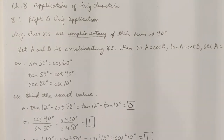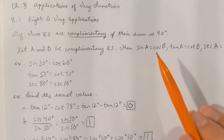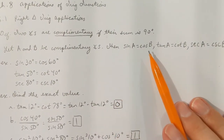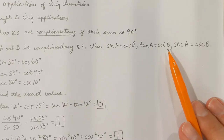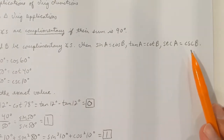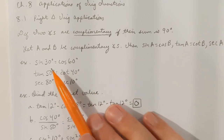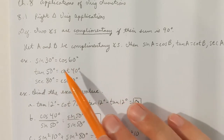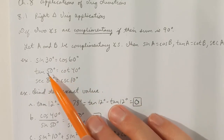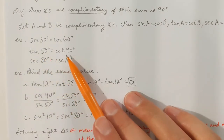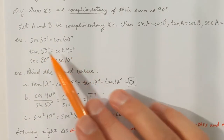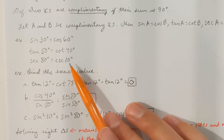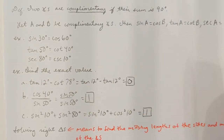Definition: two angles are complementary angles if their sum is 90 degrees. Let A and B be complementary angles, then sine of A is the same as cosine of B, tangent of A is the same as cotangent of B, and secant of A is the same as cosecant of B. For example, sine of 30 degrees equals cosine of 60 degrees, since 30 and 60 are complementary. Tangent of 50 degrees equals cotangent of 40 degrees. Secant of 80 degrees equals cosecant of 10 degrees. This can sometimes be useful in calculations.